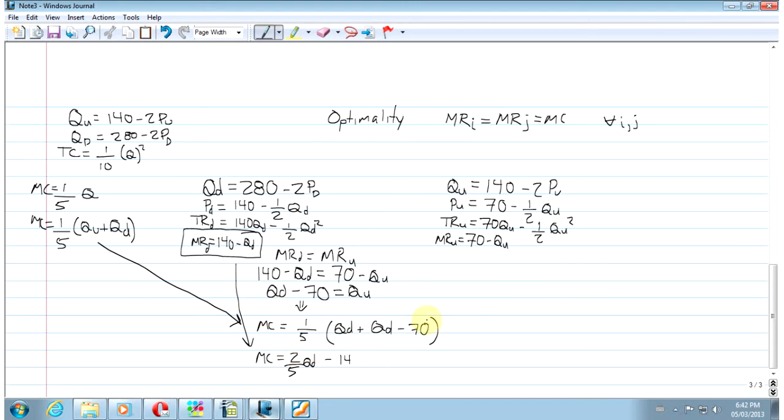So the marginal cost, the one we've rearranged, equals MR from Disney. So 2 over 5 Q Disney minus 14 equals 140 minus Q_D. So 7 over 5 Q_D equals 154. Q_D equals 154 times 5 over 7. Q_D equals 110.